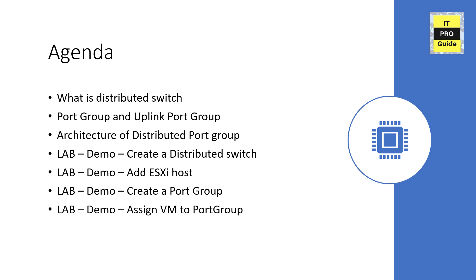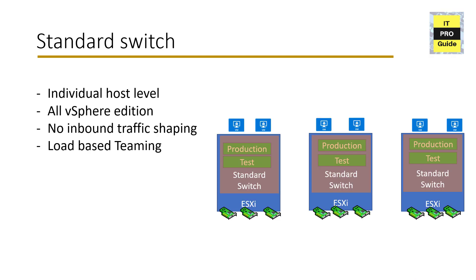These are the basic things you deal with in a VMware distributed switch. Further to this, there are some additional configurations required for optimizing your network performance, which you will see in coming sessions. In this session our scope is limited to what's listed. Let's first recap what we learned in the previous video about standard switch.